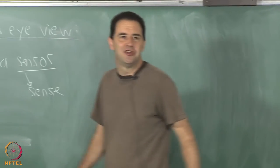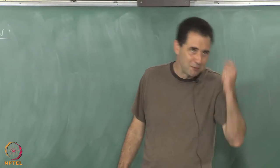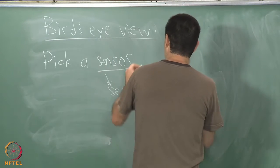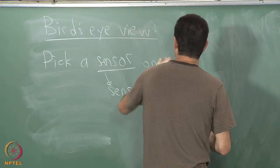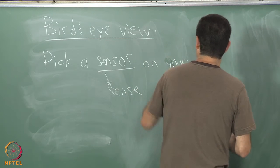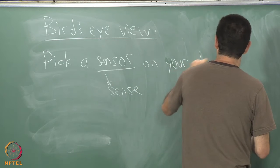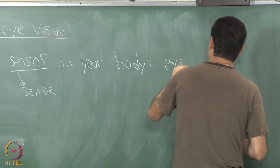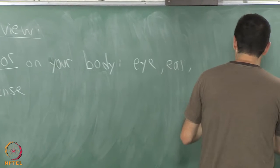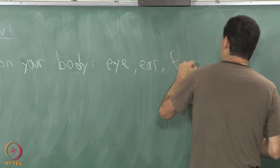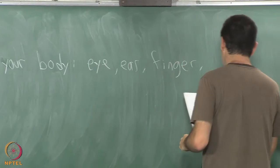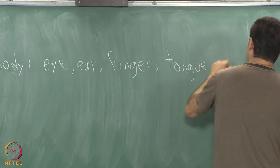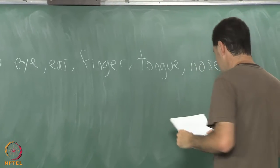I may use the word sensor and sense interchangeably. Pick a sensor on or in your body. Eye, ear, perhaps your skin somewhere like on your fingertip. We can have tongue for taste, we can have nose for smell.